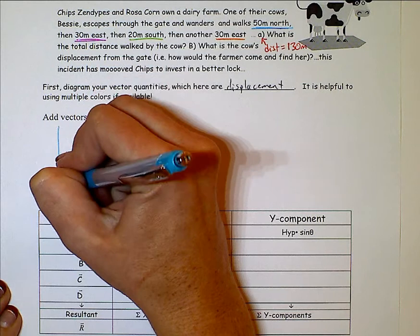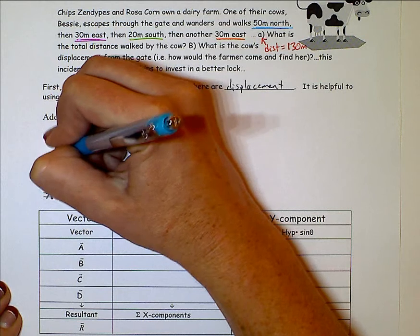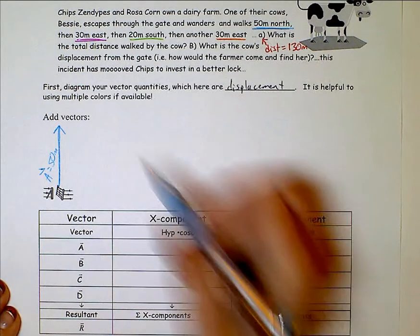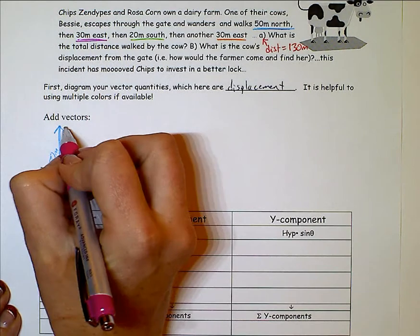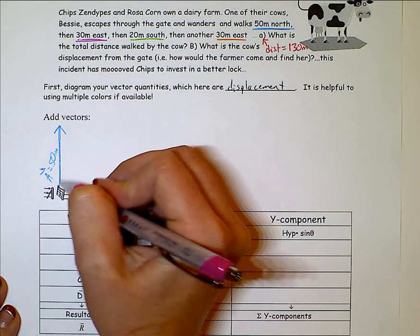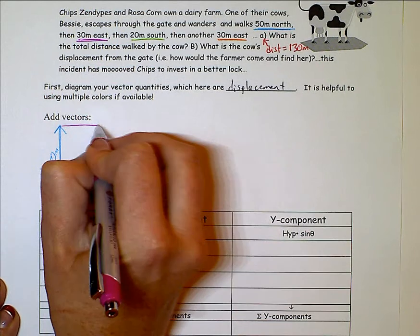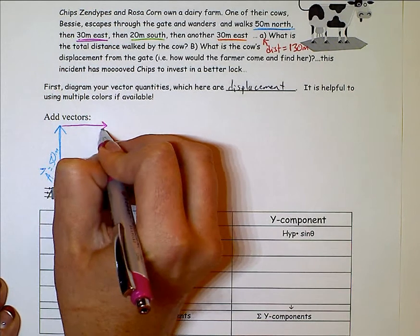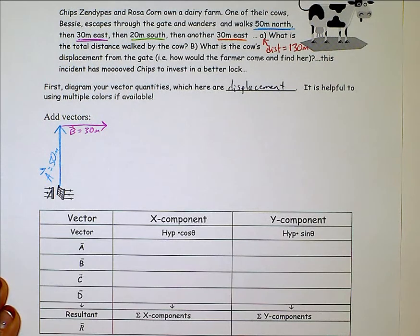So the first one, A is straight up for 50 and she stops here and turns to the east. She goes 30 to the east. I want to make 30 so it's about this long.